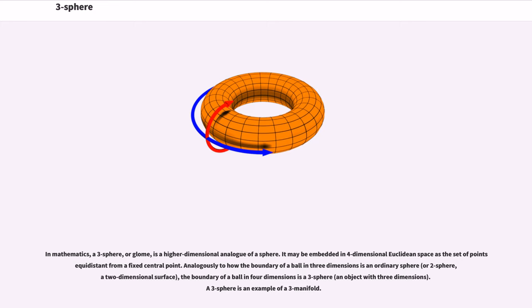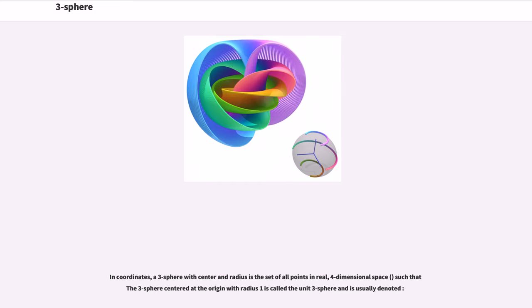A three-sphere is an example of a three-manifold. In coordinates, a three-sphere with center and radius is the set of all points in real four-dimensional space, such that the three-sphere centered at the origin with radius 1 is called the unit three-sphere and is usually denoted.